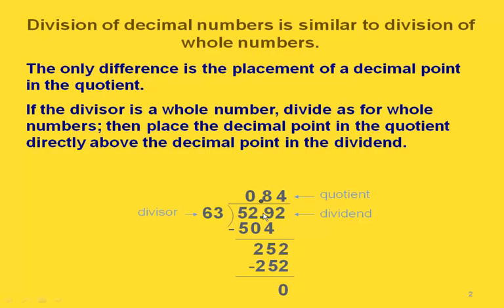If we have our division problem set up for long division, we go through and do the division just as though our dividend were a whole number. Then when we are all the way done, we go back in and put our decimal point directly above where it was in our dividend.